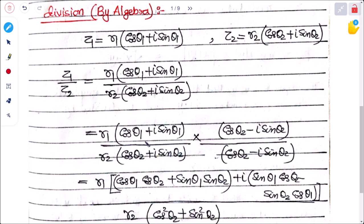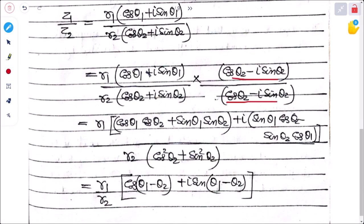We multiply numerator and denominator by (cos θ₂ − i sin θ₂). Expanding the numerator gives: cos θ₁ cos θ₂ + sin θ₁ sin θ₂ + i(sin θ₁ cos θ₂ − sin θ₂ cos θ₁). These are recognizable trigonometric expressions.